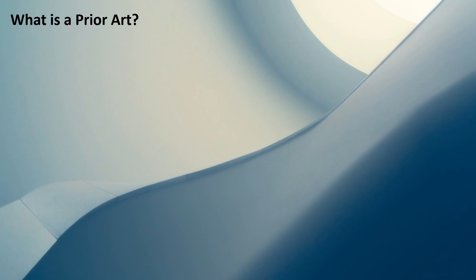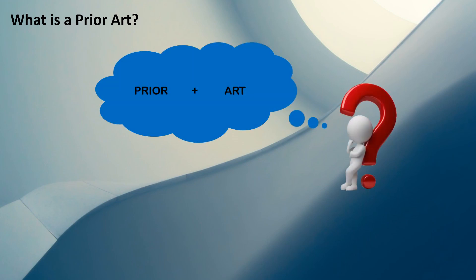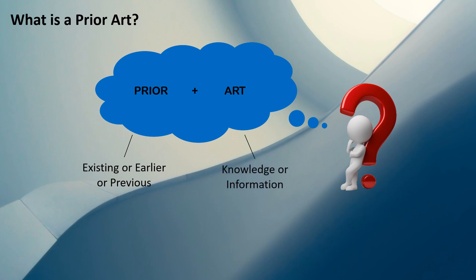Before we understand what a prior art search is, let's understand what prior art is. Prior art is basically made of two terms: one is 'prior' and the other is 'art.' The meaning of each term: prior means existing, earlier, or previous, and art means information or knowledge. When we combine them, the meaning of prior art is any information or knowledge that is already existing.